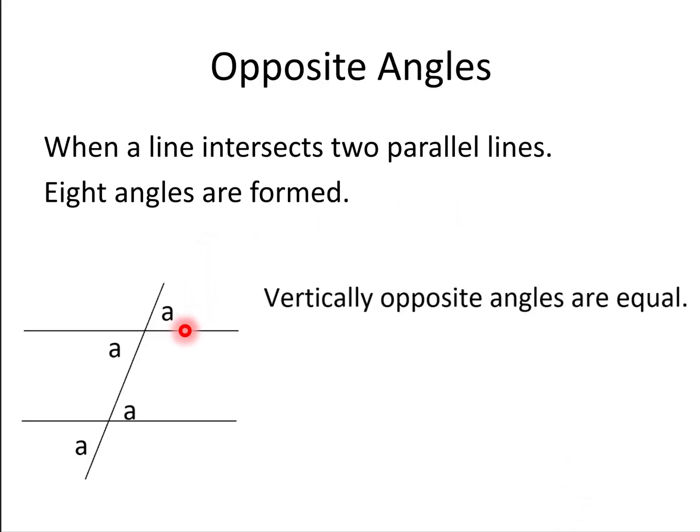When a line intersects two parallel lines, as we've said before, eight angles are formed, and those that are opposite are equal. Now that can be across here, but it can also be across the parallel lines, because these are parallel. As they get smaller and smaller and closer and closer together, you end up with it being like one really thick line. So these are also considered to be opposite angles.